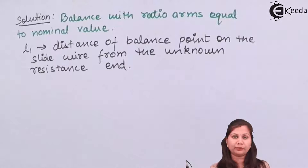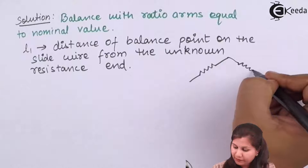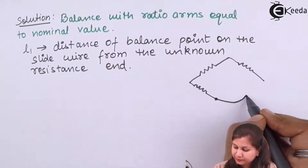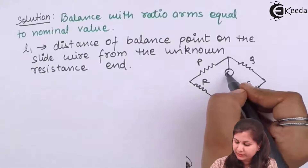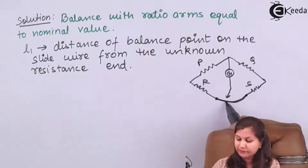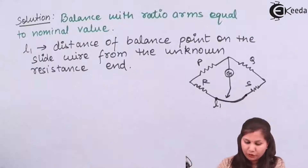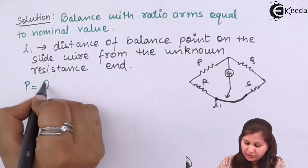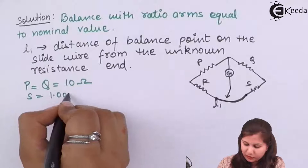When calculating the balance point from the unknown resistance side, the bridge has P and Q as ratio arms, R as the unknown resistance, and S as the standard resistance, with the slide wire connected and a galvanometer in between. The balance condition for the Cary-Foster bridge is P/Q = R/S. Since the ratio arms are equal to their nominal value, P and Q are each equal to 10 ohm.